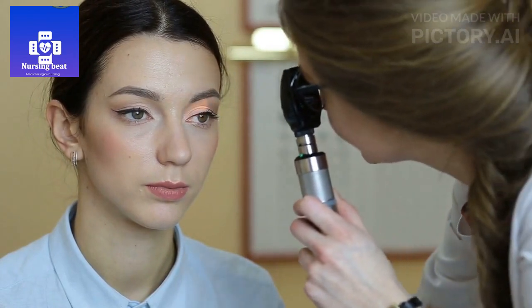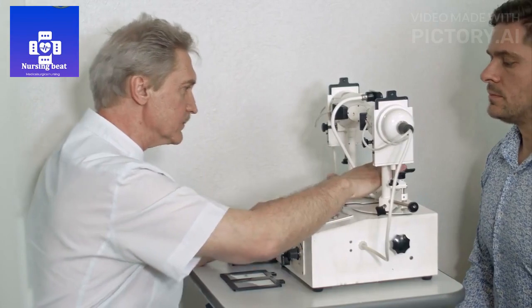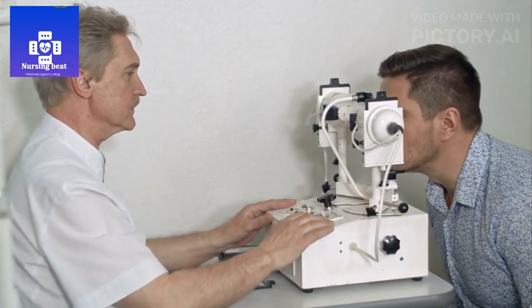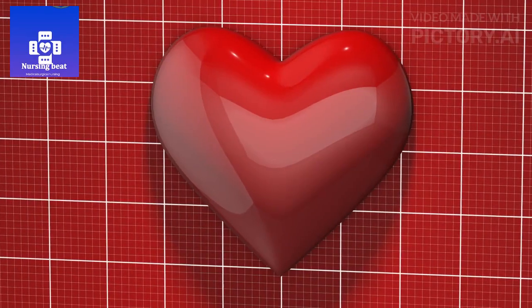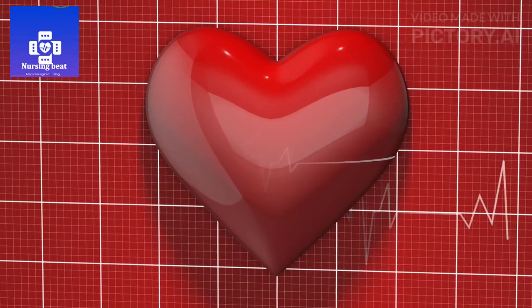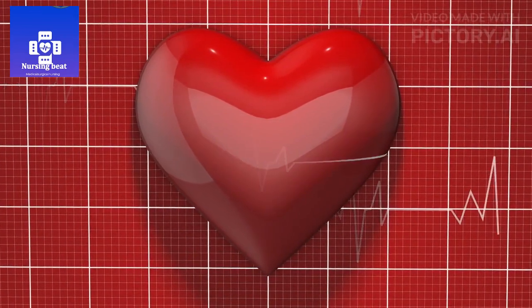2. Regular eye exams. Schedule annual eye exams to catch any signs of retinopathy early. 3. Blood pressure control. Manage blood pressure to reduce strain on blood vessels in the eyes. 4. Healthy lifestyle. Maintain a healthy diet, exercise regularly, avoid smoking, and limit alcohol consumption.